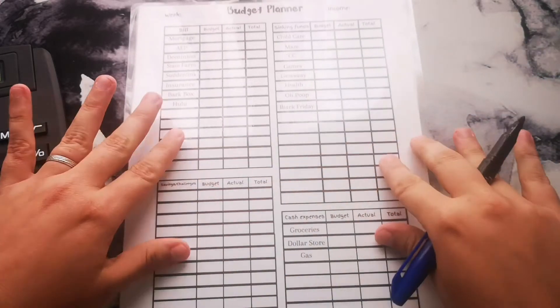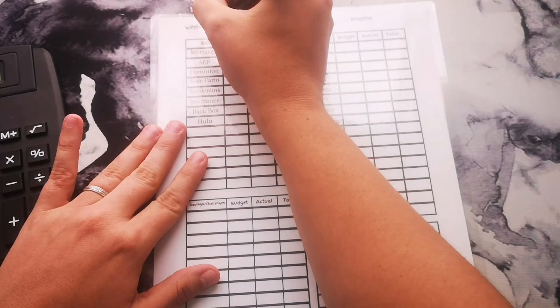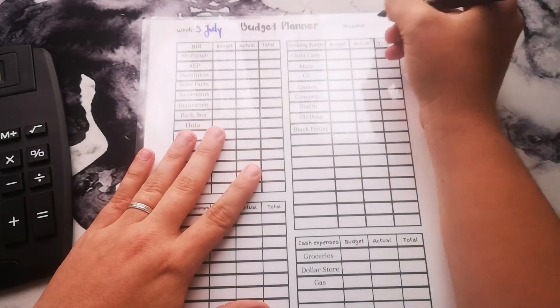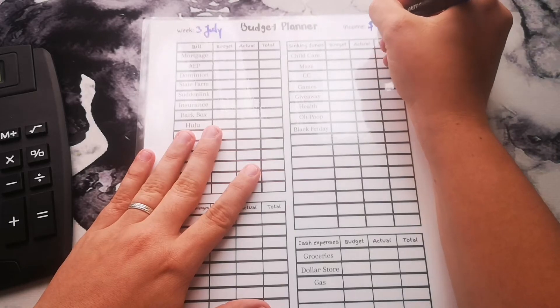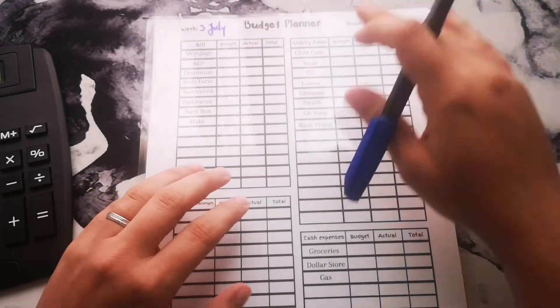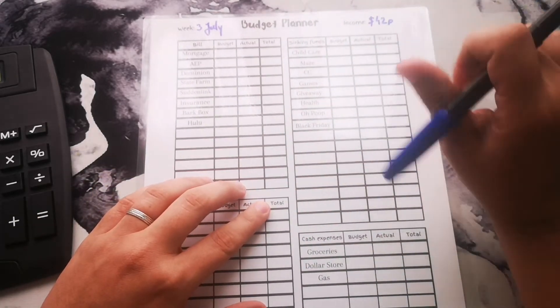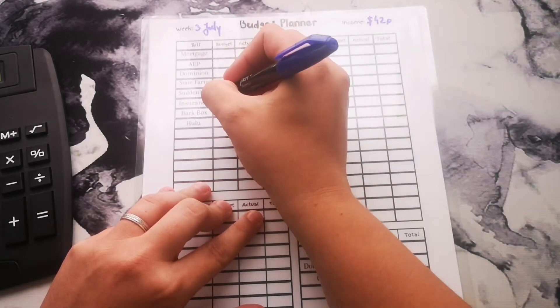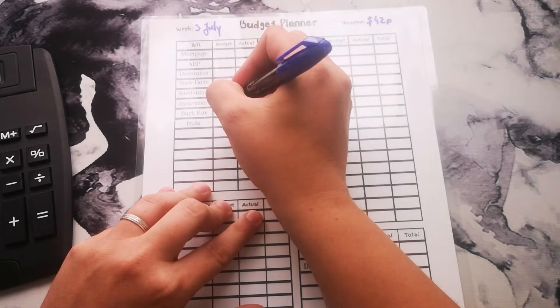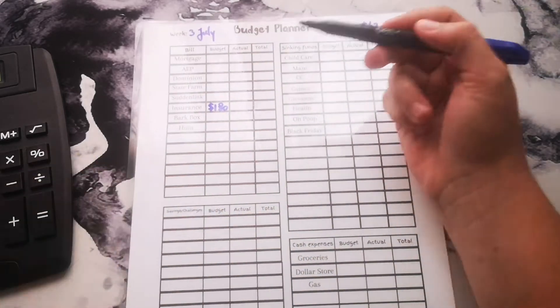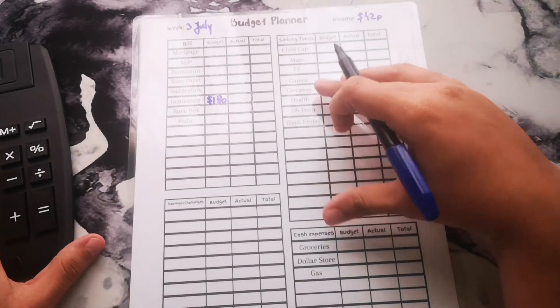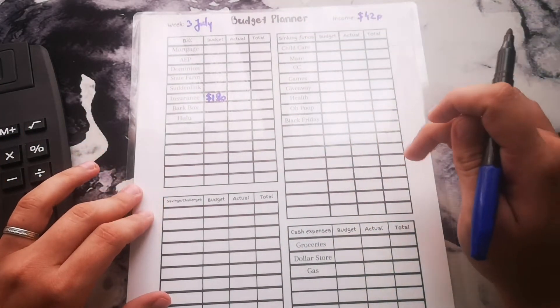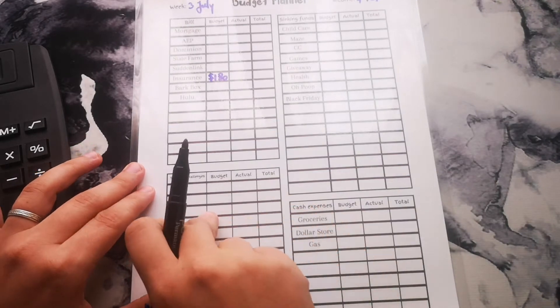This is week three of July and we're working with $420 cash. I already put money aside for insurance, so that will have $180 that's already in the account, so we don't have to worry about that. We can go straight into our cash expenses, sinking funds, and savings challenges.